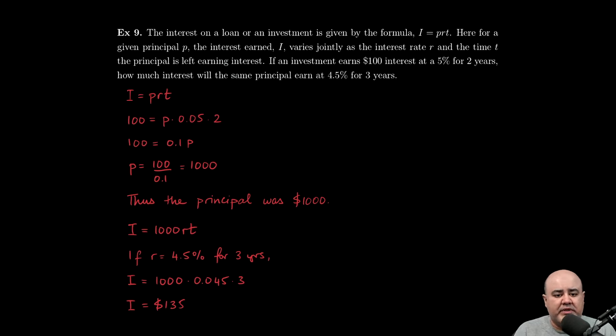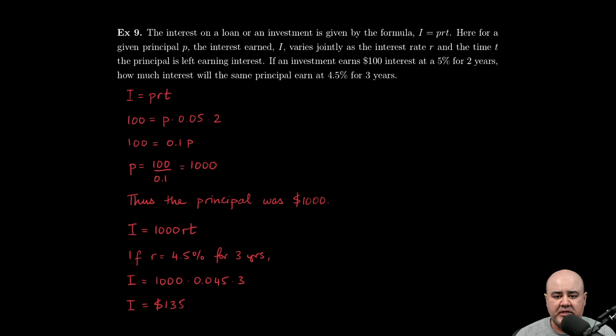In this last example, we talk about the interest on a loan or perhaps an investment being given by the formula I equals P times R times T.